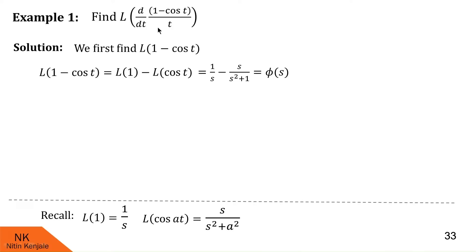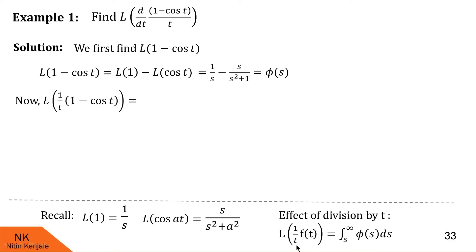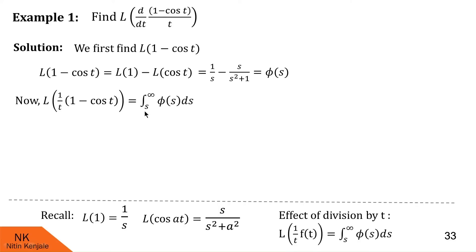Now we proceed to find the Laplace transform of (1 − cos t)/t. Recall the formula: the Laplace transform of f(t)/t is the integral of φ(s) ds from s to infinity, where φ(s) is the Laplace transform of f(t). In this case f(t) = 1 − cos t, so we use its Laplace transform. Writing the formula, we get the integral from s to infinity of [1/s − s/(s² + 1)] ds.